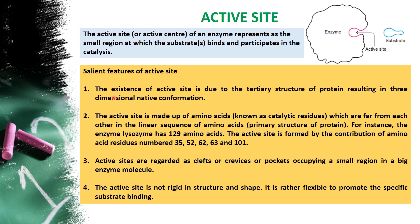The first point is: the existence of the active site is due to the tertiary structure of protein, resulting in three-dimensional native conformation. Since the enzyme is a protein in nature and holds a tertiary structure — meaning it can bend and fold to form a structure — it makes amino acids from different portions of the chain come together, not in a series like one, two, three, to form the pocket or groove of the active site.